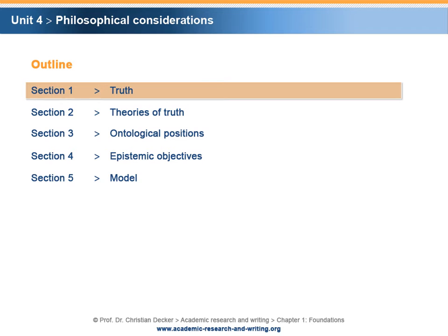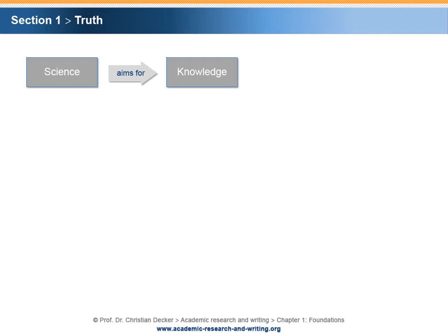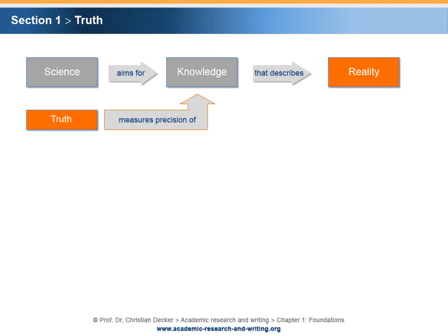Section 1 – Truth. In the previous unit, science was characterized as an activity which systematically questions existing knowledge and generates and distributes new knowledge. The term knowledge implies a description of reality. However, the description of a complex reality is quite an ambitious task that is doomed to fail. Knowledge is often merely an approximation of reality. Therefore, the term truth is used in order to measure the precision of knowledge.